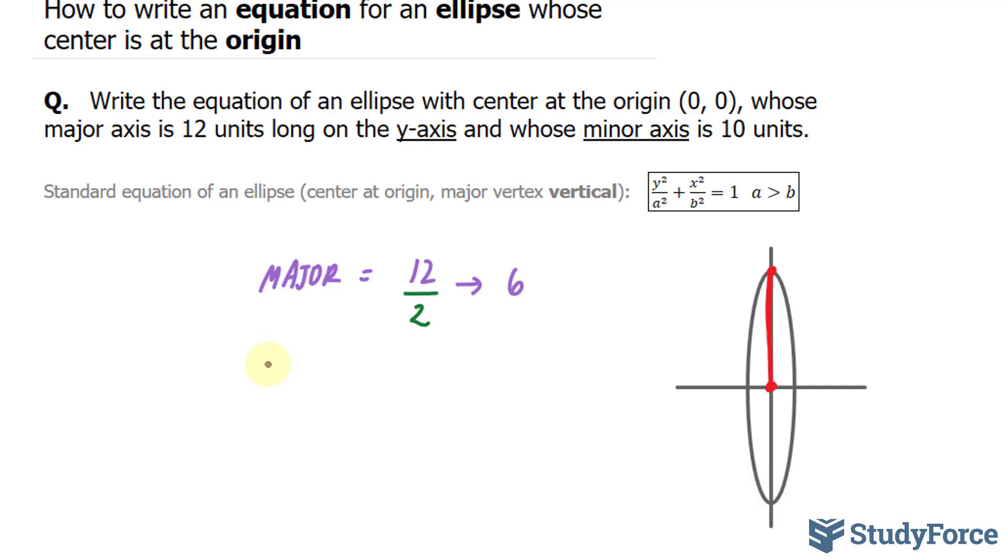Now our minor axis, as mentioned in the question, is 10. The minor axis is the distance from here to here. I know it's not to scale, but it's a good representation nonetheless. So from here to here is 10, and to find b—that's the distance from here all the way to here.